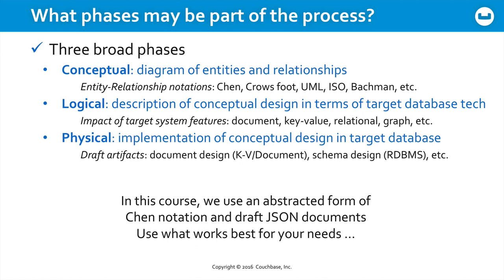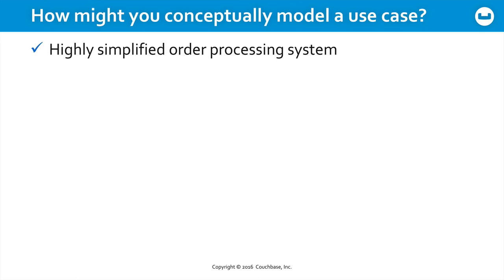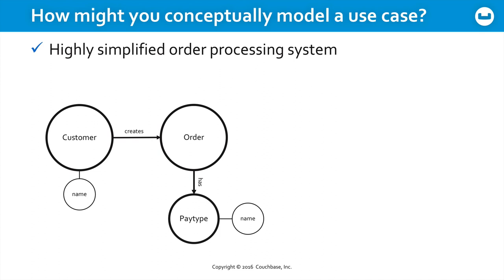So how might you conceptually model a use case? Imagine a very simplified order processing system. You might have a customer who has certain attributes, like a name, who creates an order. Now that order needs to be paid for, so there's some kind of a pay type that will handle the information for how a given individual order will be completed. The order itself has items — why order unless you're going to order particular items? Notice that items is plural, indicating that when this gets into the logical and physical phases, you might be dealing with some form of array or something of that sort.